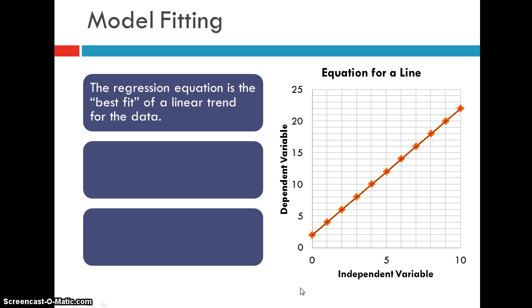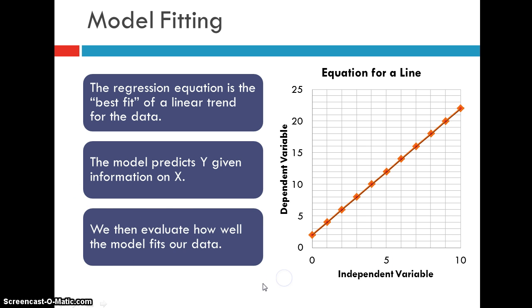Okay, so what we're really doing here is we're fitting a mathematical model to our data. So the regression equation is the best fit, like the best line that you can draw that reduces how far away the points are from that line of the actual data. Because we can predict y, but we also have actual y scores. And that allows us to determine how well x predicts y. So the model predicts y given information on x. And then we can determine how well that model fits our data. And there's actually a particular calculation you can do to help do that.